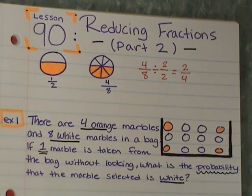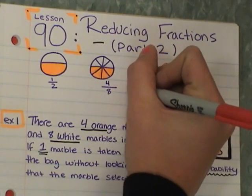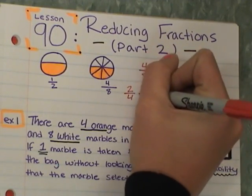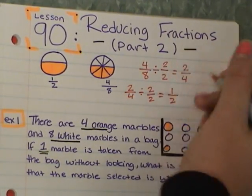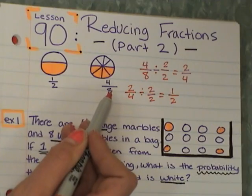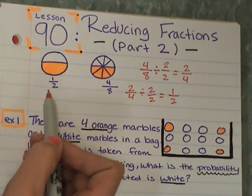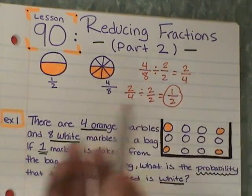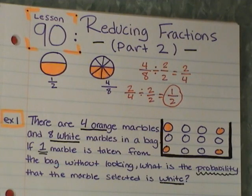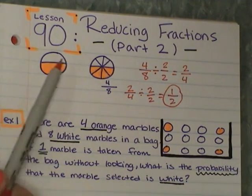But 2 fourths can also be reduced again. If you look at 2 fourths, 2 goes into 2 once and 2 goes into 4 twice. So we can actually reduce again a second time to lowest terms. 2 fourths can be reduced again by 2 over 2. 2 divided by 2 is 1, 4 divided by 2 is 2, and that's where we get our 4 eighths to our lowest terms of 1 half. So this is the answer we're looking for. This is right, 4 eighths can be reduced to 2 fourths, but we want it in lowest terms. In lowest terms is 1 half.